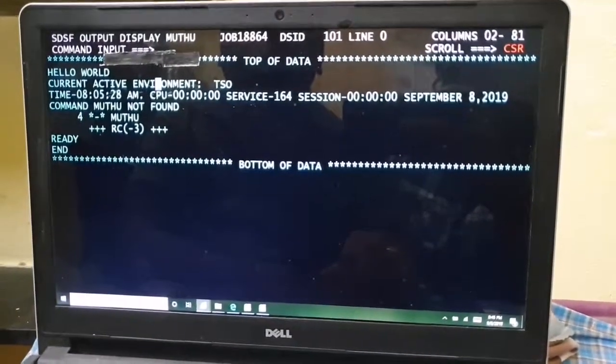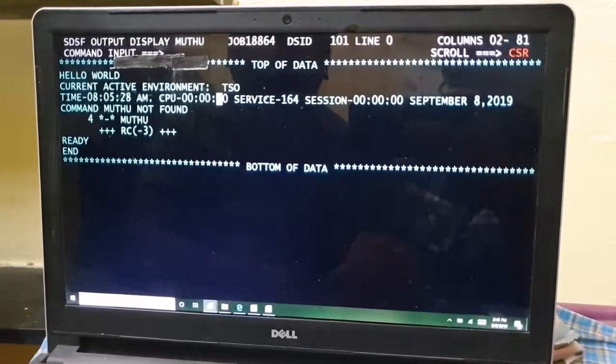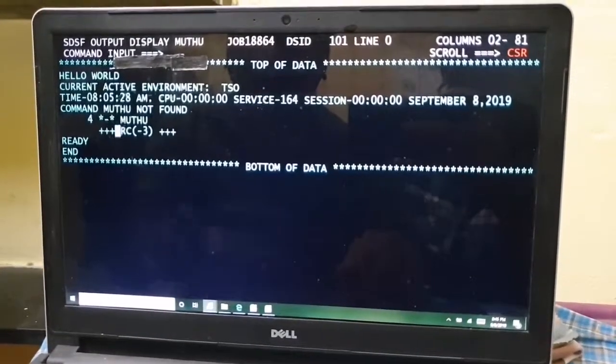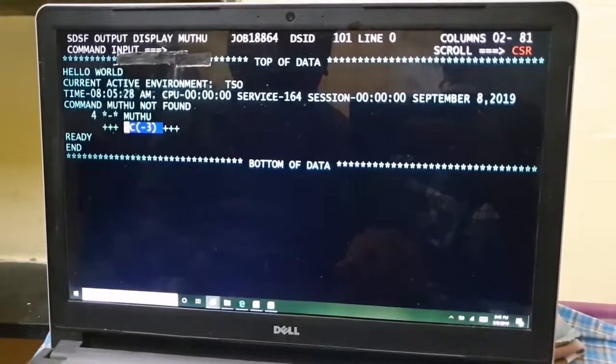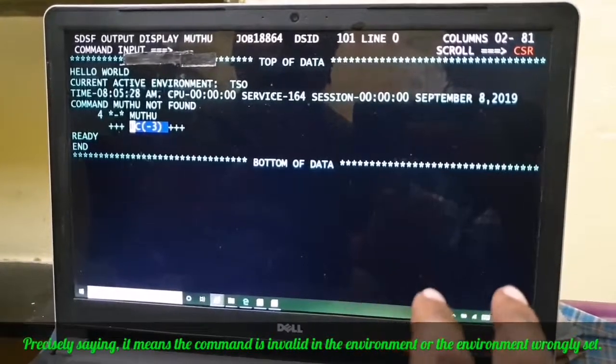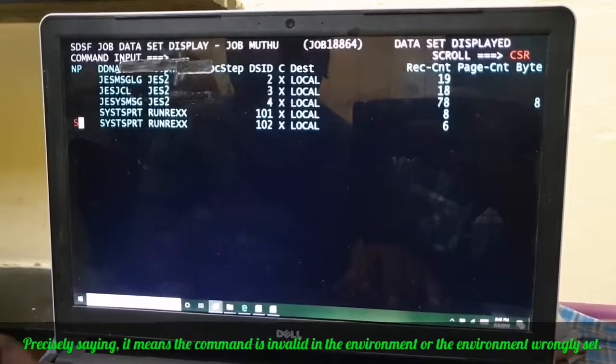I have submitted the job and the results we have seen here. So in case of first, I am seeing here HELLO WORLD, which is IKJFT01 way. It is saying that backend environment is TSO and TIME it got. And with respect to command it is failing with the return code of three. The return code of three is very common in both REXX and CLIST. It says that the environment is inactive, so TSO cannot understand the MUTU command. That is what it is saying.